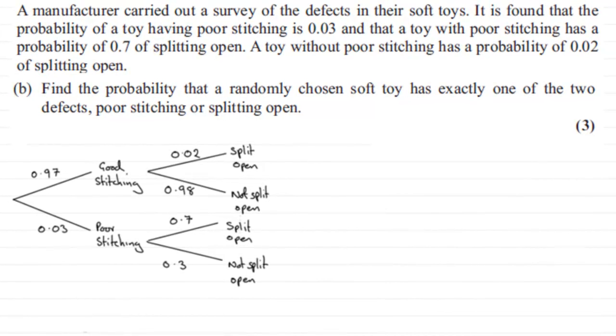Now for part B of this question, remember in part A we drew a tree diagram for this information up here, but for part B we've got to find the probability that a randomly chosen soft toy has exactly one of the two defects, poor stitching or splitting open.